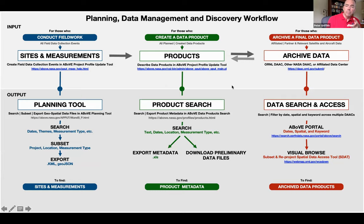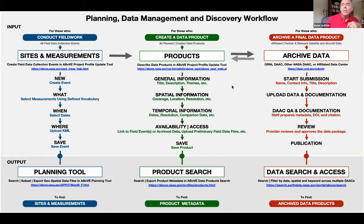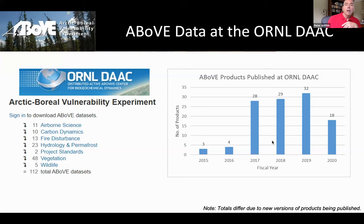We help investigators port information from the planned data product into the archived data product, and then there's the NASA Earth Data Search system to help people explore that. Currently, there are a lot of data products archived at Oak Ridge DAAC from several different phases of ABOVE — the pre-ABOVE phase, phase one, and the airborne phase, which is still continuing. The airborne campaign planned for this year will occur in 2021 if all goes well.